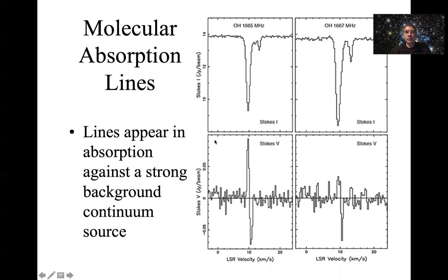As I mentioned at the beginning, you can also have absorption lines. Here is the OH transitions in the OH molecule, or radical more accurately. Here you've got a strong background continuum, maybe an HII region or something in the background, and then you've got a cloud of molecules in front of that. As the photons go through the molecular cloud, they get absorbed at the wavelength of the transition. You can see a strong absorption line here.